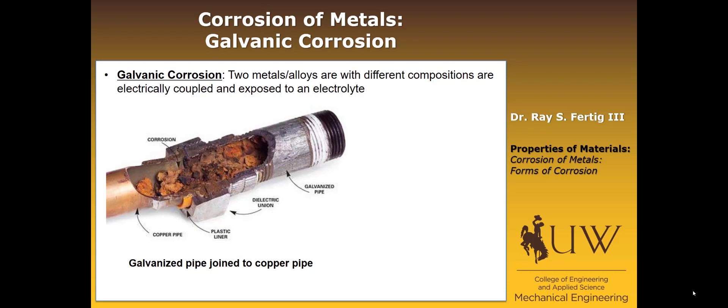What you're seeing in this picture is a galvanized pipe that's joined to a copper pipe. Of course, they have different potentials, which leads to an oxidation-reduction reaction, especially in the presence of an electrolyte like water in this case.